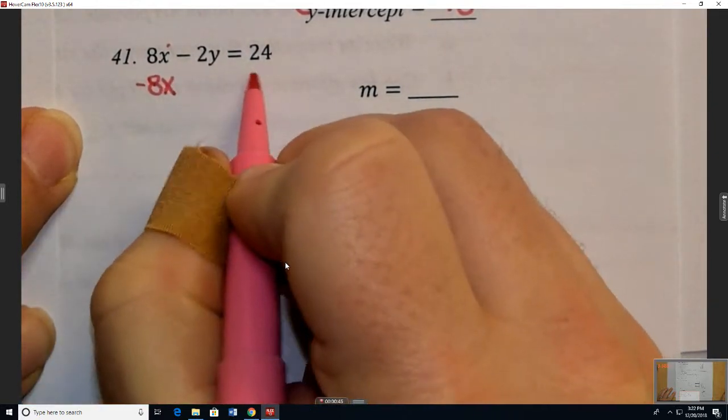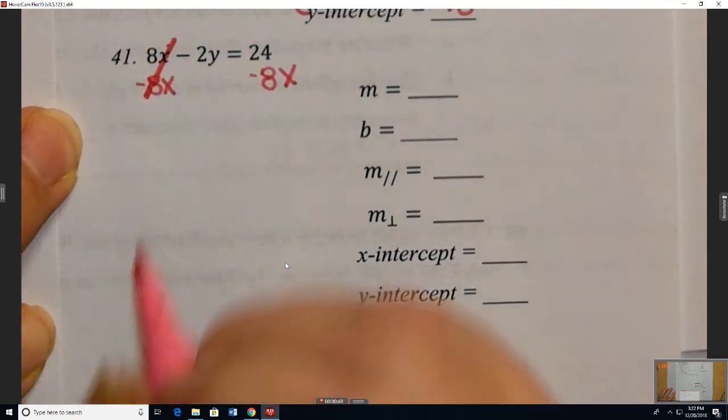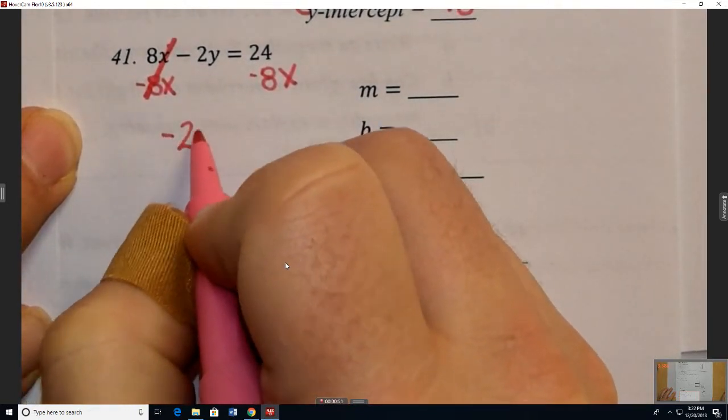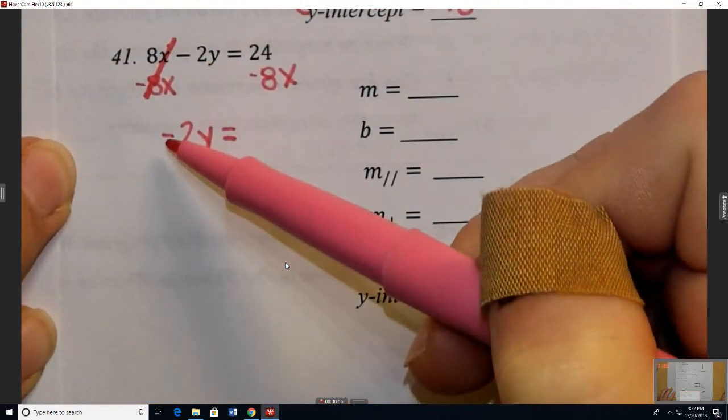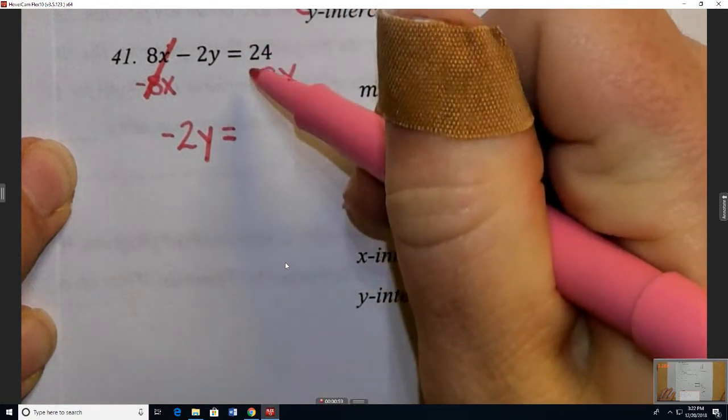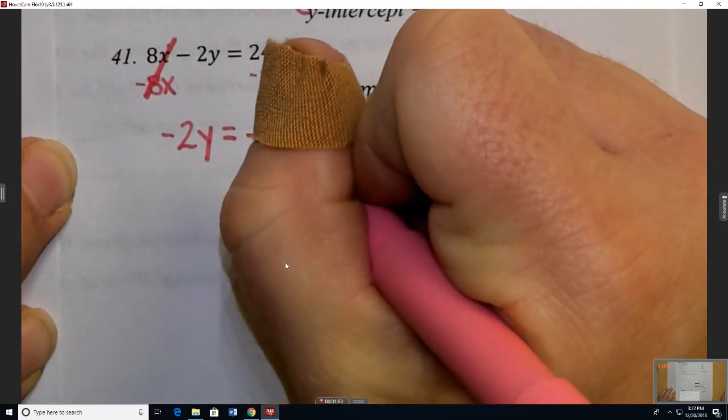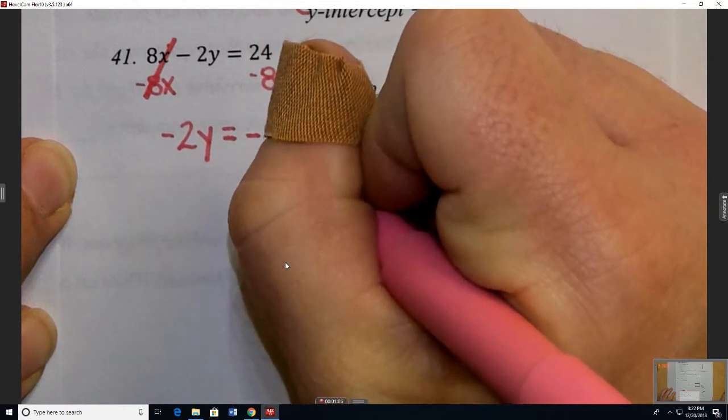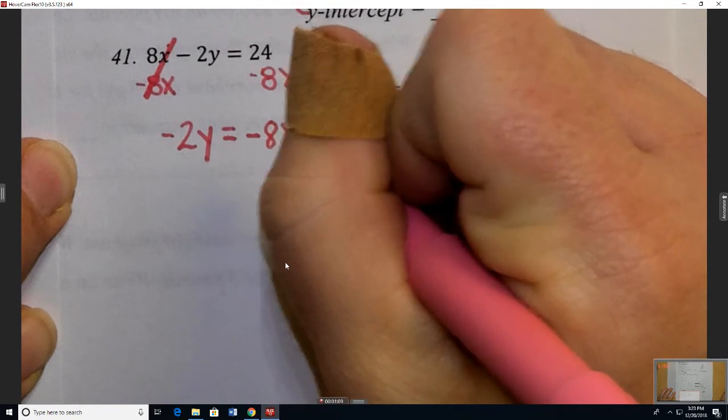So we will subtract 8x from both sides, which will cross it out over here. And we'll bring down that negative 2y. Make sure you bring down that negative with it because it was a subtraction. But over here, we notice we don't have like terms. And so in our class, at least, we talked about just bring it down. When it moves to the other side, it gets the opposite sign. And then bring down the 24.